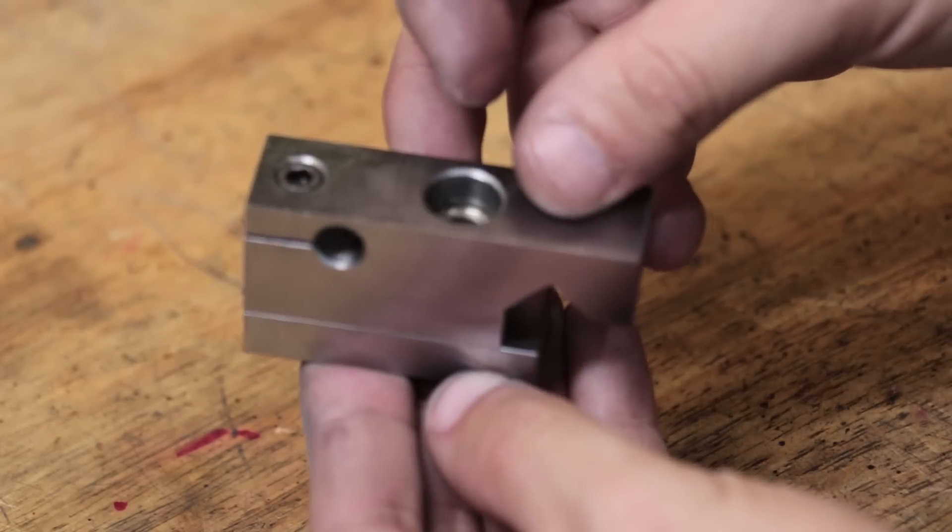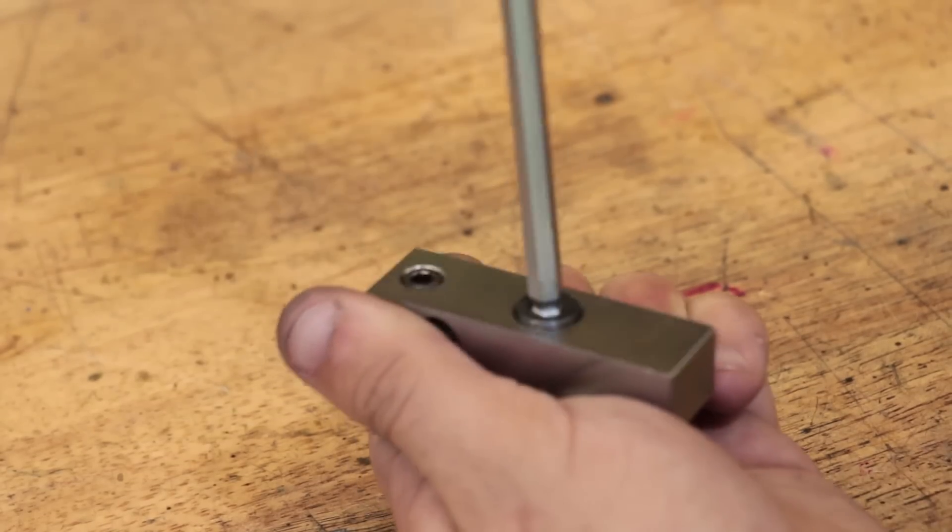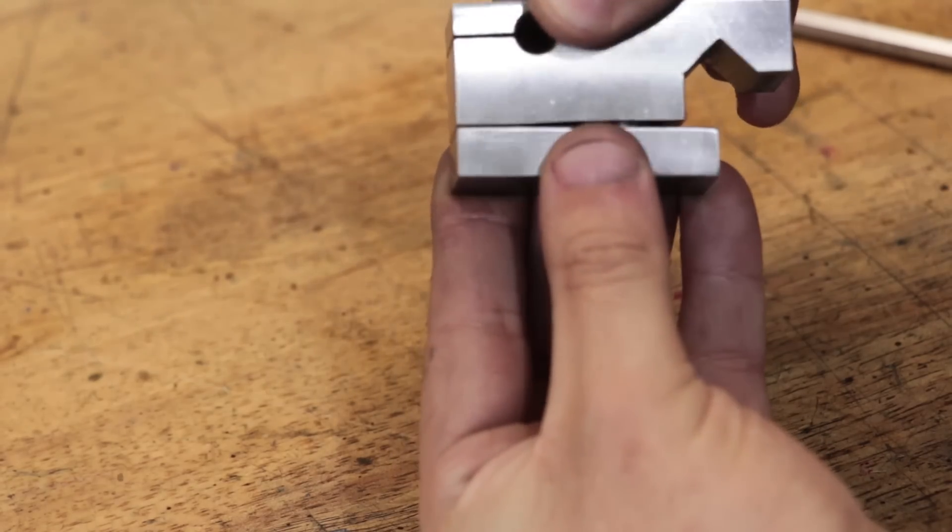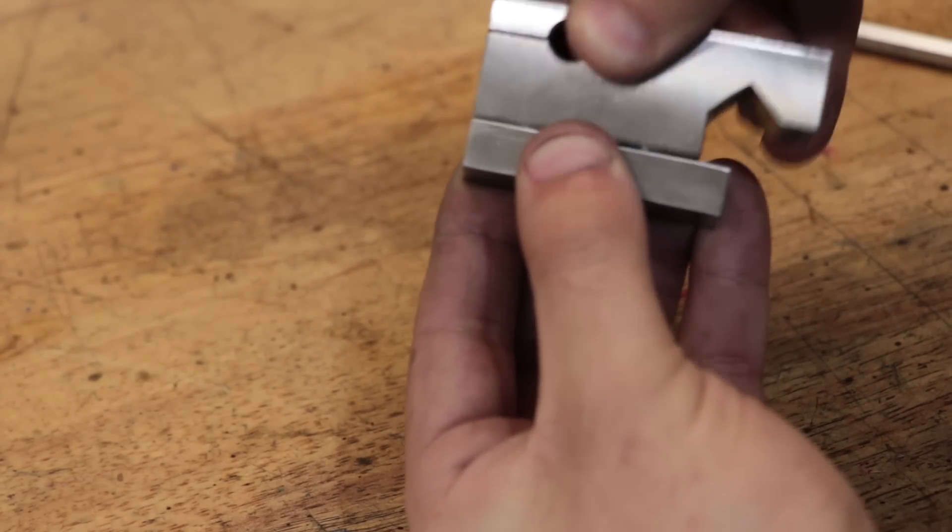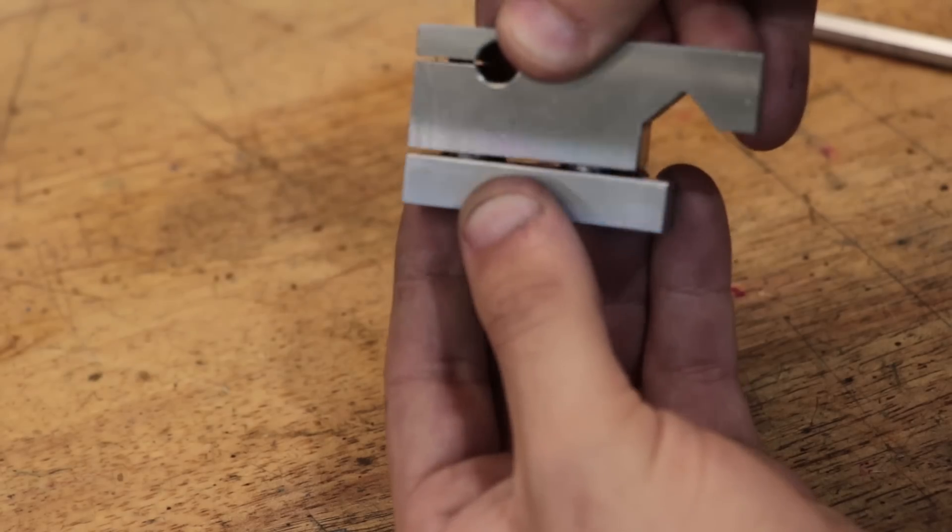And that is looking really good. If I add the screw, you can probably see how this works. The screw pulls the bottom plate upwards, and the two pins help keep everything aligned.